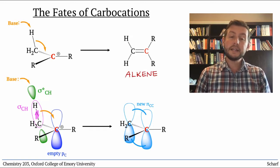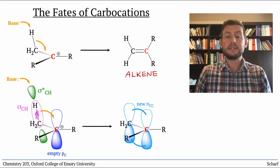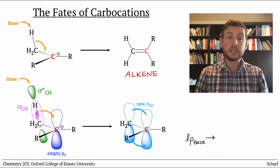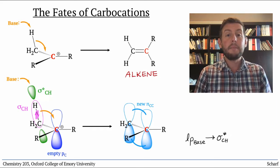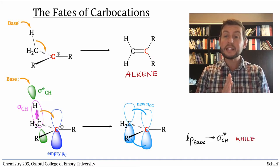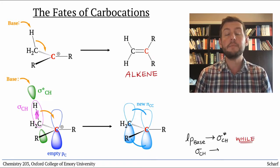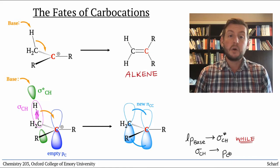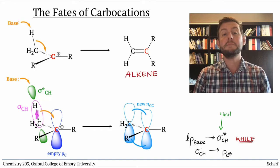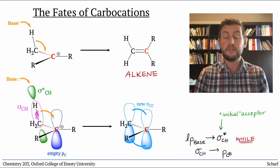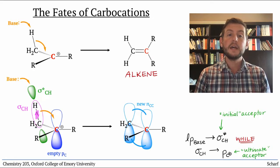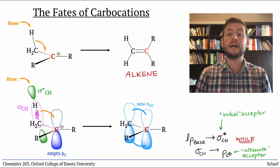From a molecular orbital perspective, we might describe this as the base donating electrons initially into sigma star C-H, but only when the corresponding sigma C-H can simultaneously donate into the empty p orbital. We could call the sigma star C-H the initial acceptor, and the empty p orbital of the carbocation the ultimate acceptor.